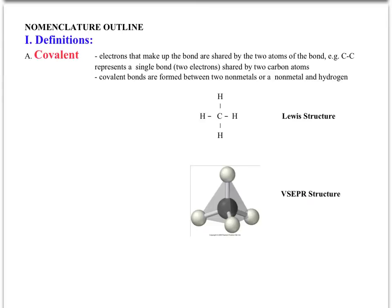You can see that carbon is in the middle with four hydrogens at the corners of a tetrahedral pyramid, so there is geometry associated with the structure. For now, we'll just focus on simple covalent bonding and think of covalent bonds as lines representing electrons.